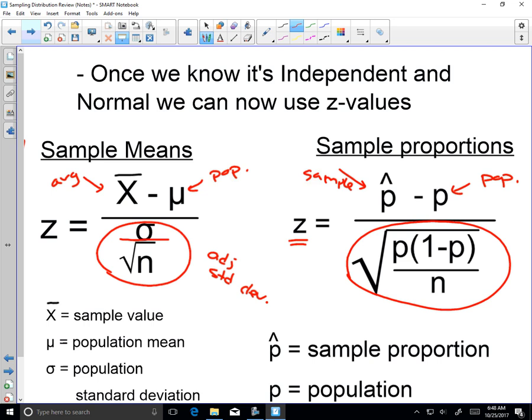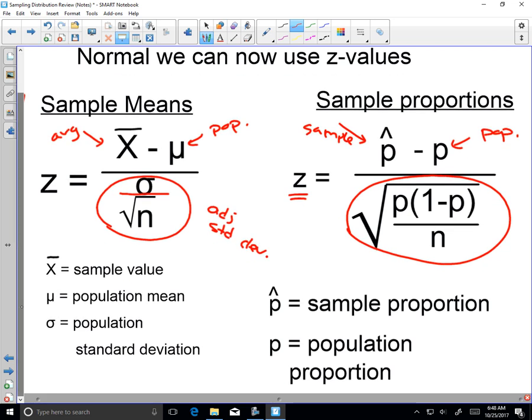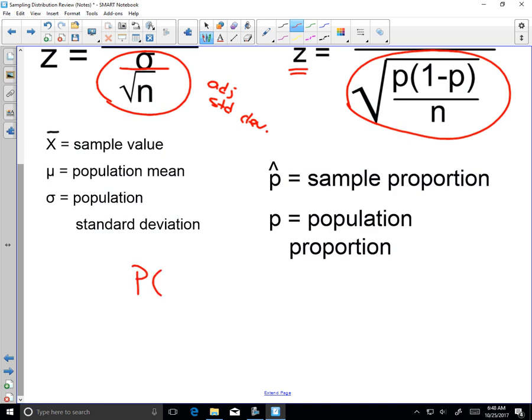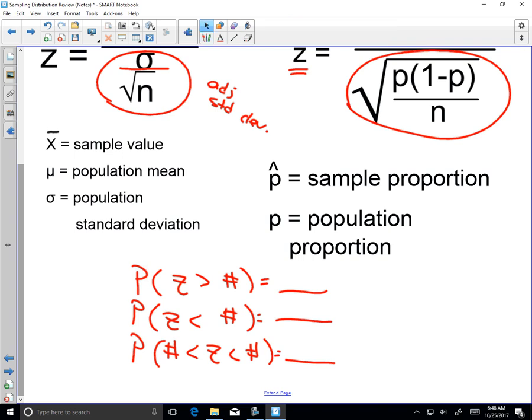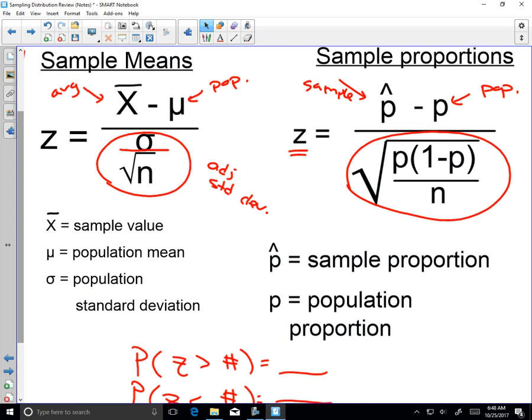And then once we find z-values, everything else we do is based on the normal distribution and probability statements. So you can have a z greater than some number equals your answer. Probability that z is less than some number is equal to your answer. Probability that z is between two numbers is equal to your answer. And that goes right back to our normal distribution information. So really only a few big ideas, few changes here. The big change is standard deviation adjusted based on sample size.